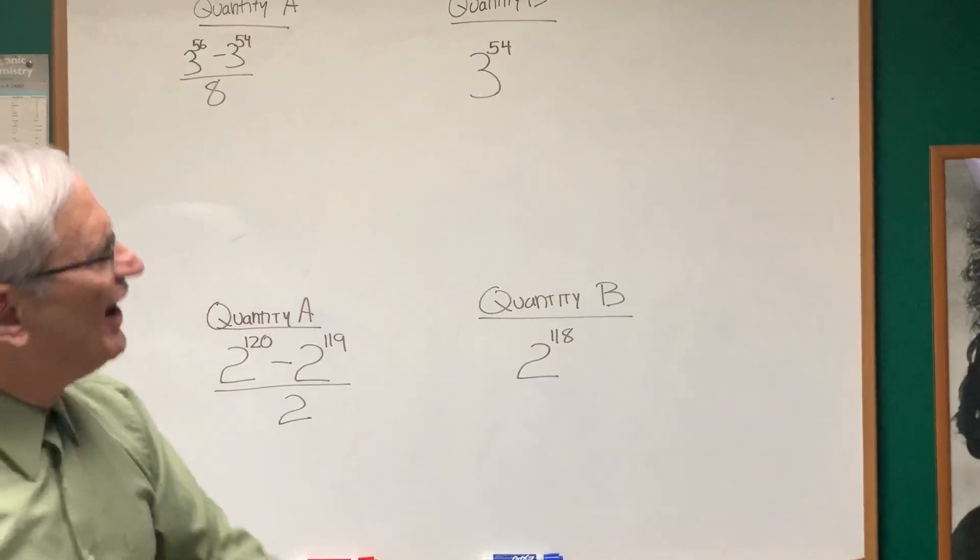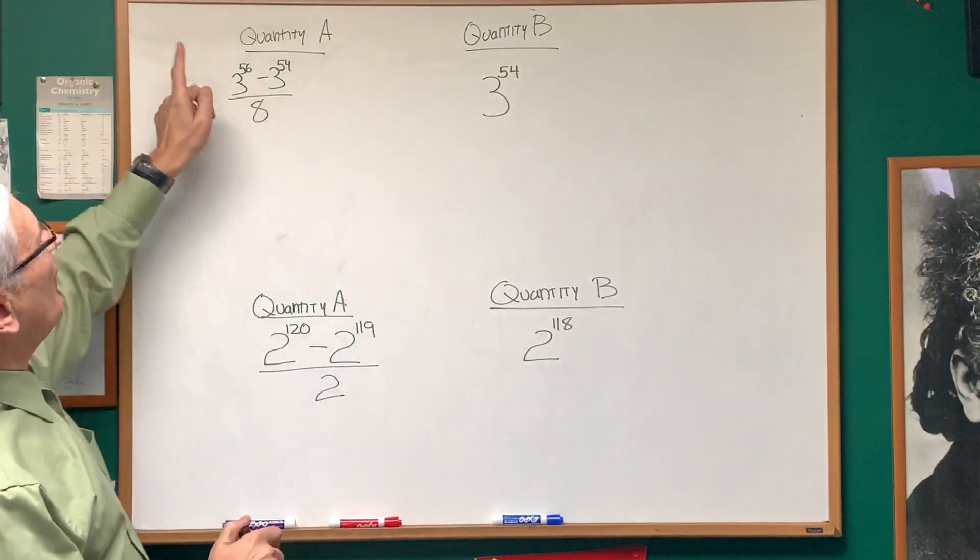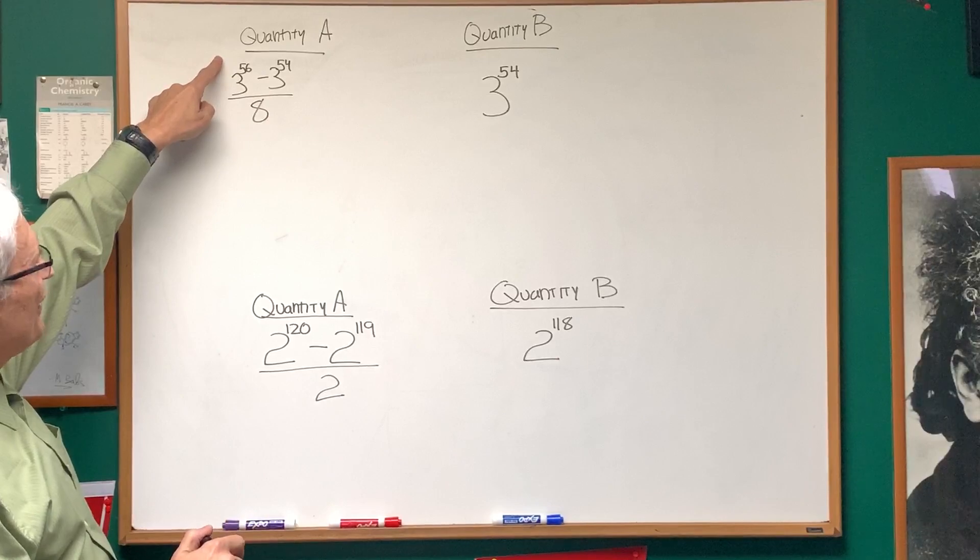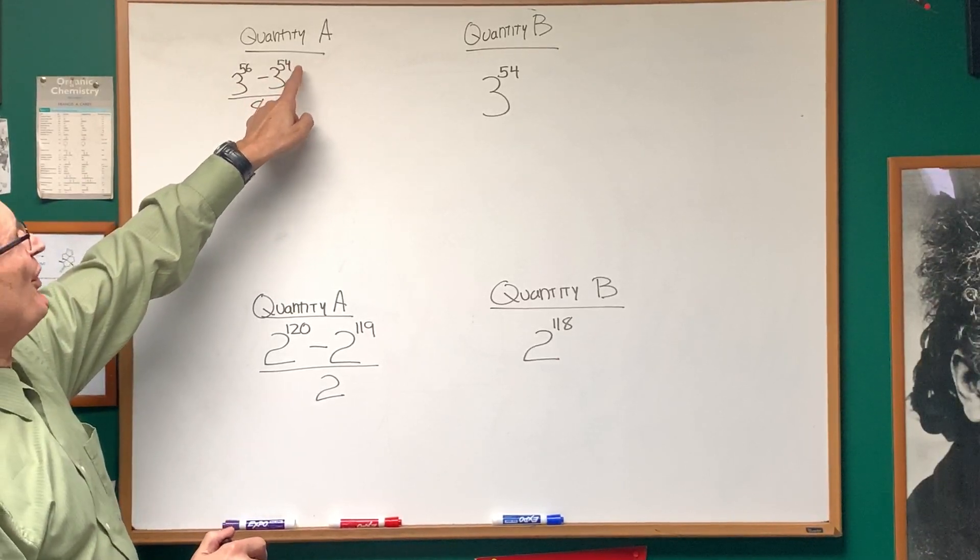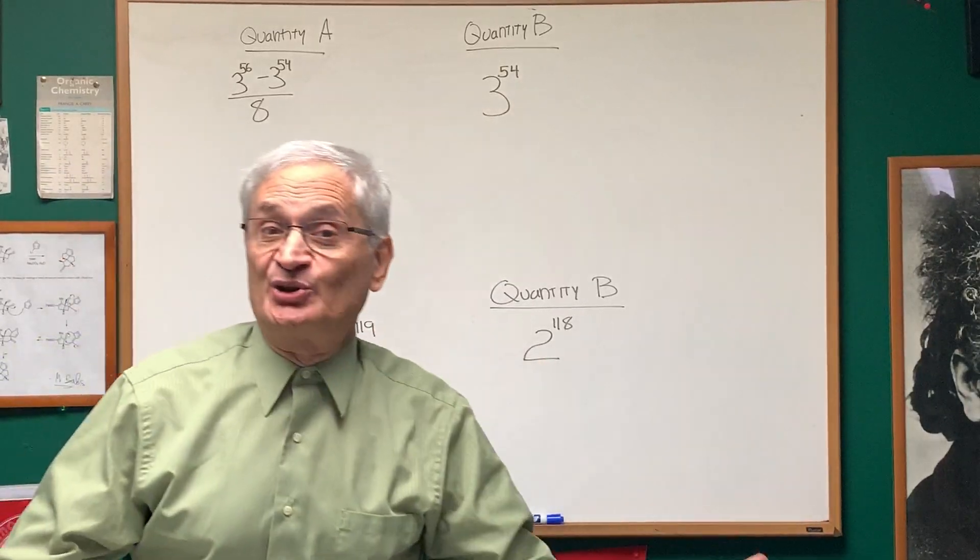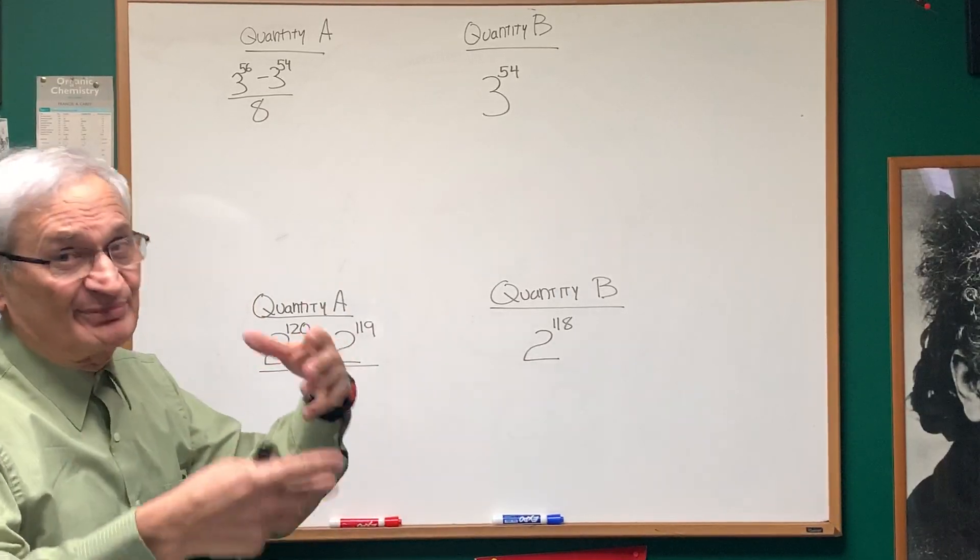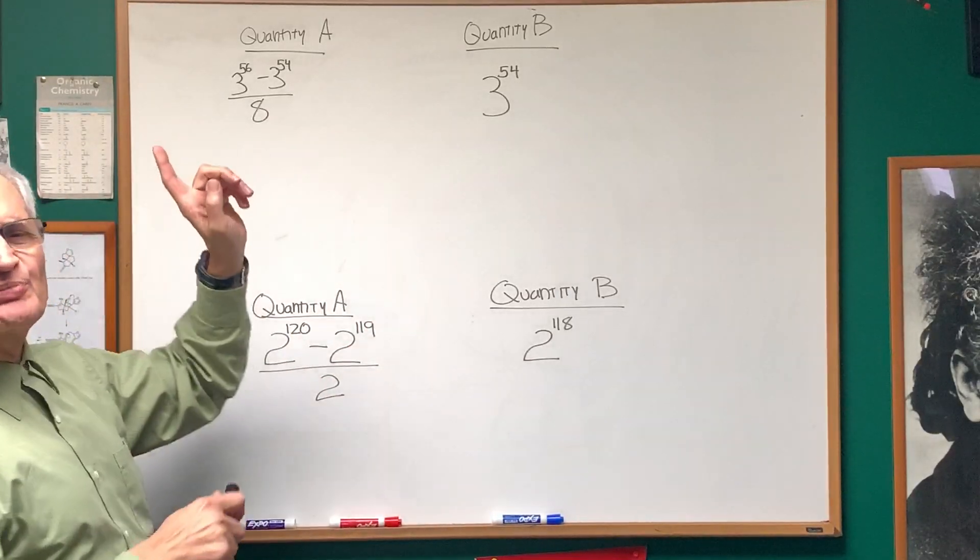Okay, so let's plunge into this, and this has to do with exponents. We have two exponential expressions. Quantity A, 3 to the 56th power minus 3 to the 54th power over 8 as compared to 3 to the 54th power. Now, the powers are too great to even use a calculator on. You don't want to do this by direct calculation, but we're going to do this by factoring.